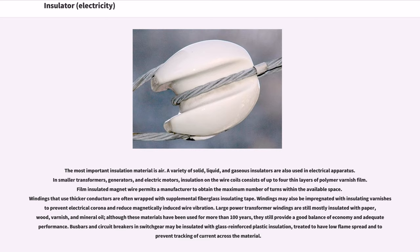Large power transformer windings are still mostly insulated with paper, wood, varnish, and mineral oil. Although these materials have been used for more than 100 years, they still provide a good balance of economy and adequate performance. Bus bars and circuit breakers in switchgear may be insulated with glass-reinforced plastic insulation, treated to have low flame spread and to prevent tracking of current across the material.